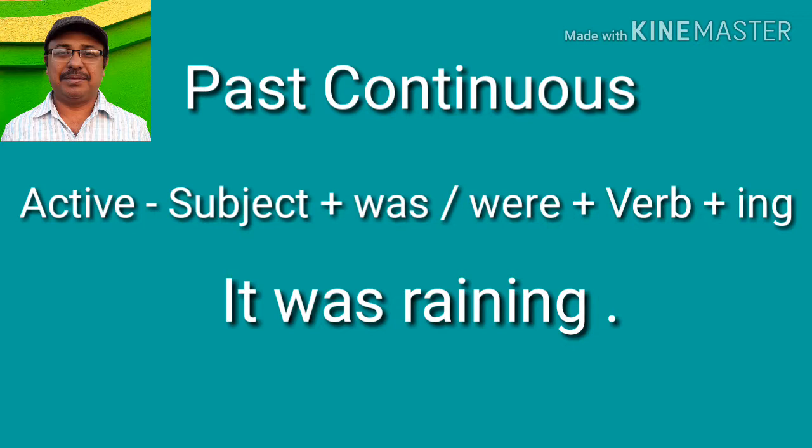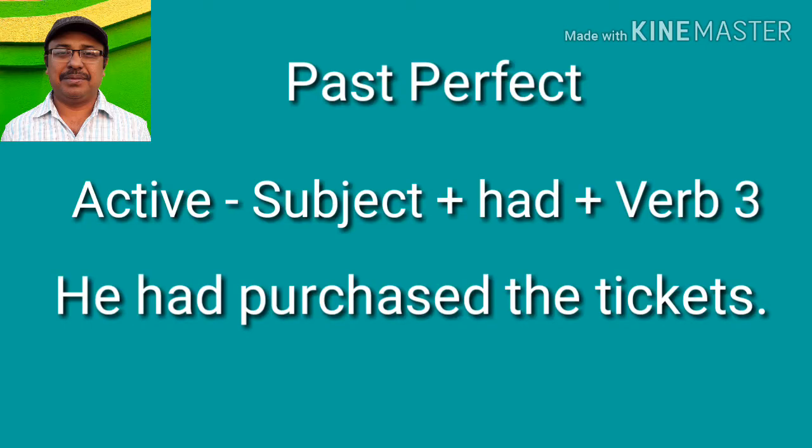'It was raining' means past continuous. Past continuous means that an action was going on in the past. 'He had purchased the tickets' — it is past perfect. Past perfect denotes an action completed before another past action.